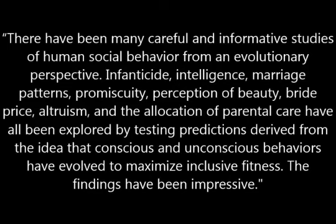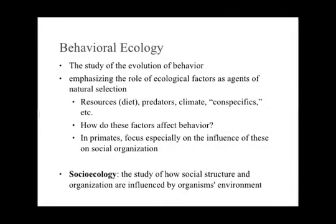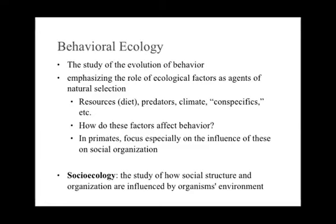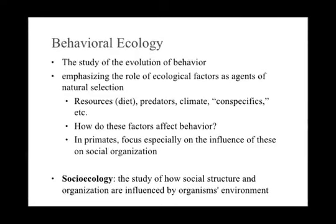Let's look at the parts of evolutionary psychology which have been tested, verified, and have yielded success — the study of behaviors and traits that occur universally in all cultures and within our animal relatives. According to Walter Cohen of the Encyclopedia Britannica, there have been many careful and informative studies of human social behavior from an evolutionary perspective. Infanticide, intelligence, marriage patterns, promiscuity, perceptions of beauty, bride price, altruism, and the allocation of parental care have all been explored by testing predictions derived from the idea that conscious and unconscious behaviors have evolved to maximize inclusive fitness. The findings have been impressive. This brings us to an intersectionary discipline known as behavioral ecology, which is a relatively modern development in ethnology, or the study of animal behavior. This area of research feeds very nicely into the behavioral areas of evolutionary psychology and should probably be discussed more within the MGTOW community.